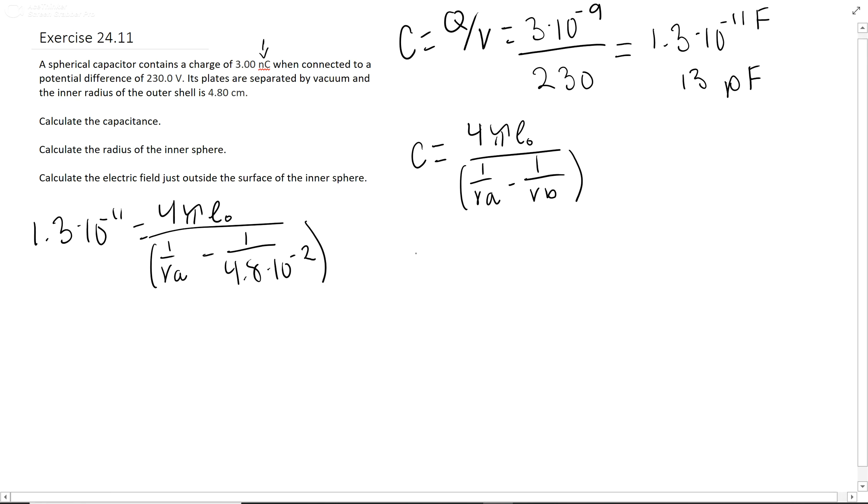Make sure you put that in meters. You can go ahead and solve for the inner radius, which is 1 over Ra equals 29.388, and Ra equals 0.034 meters or 3.4 centimeters.